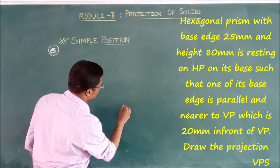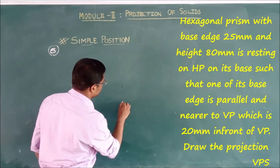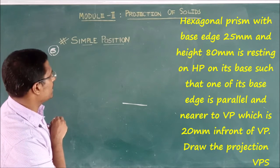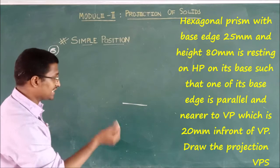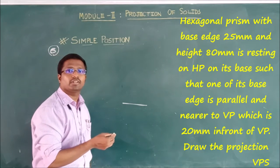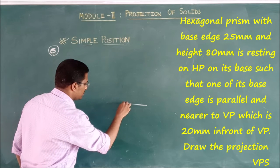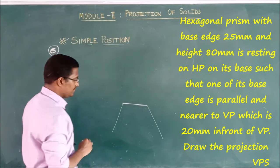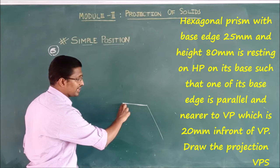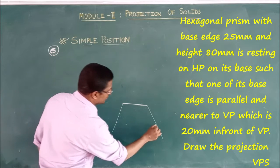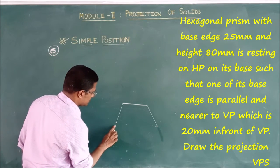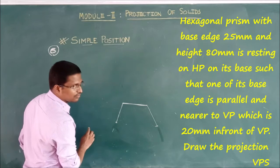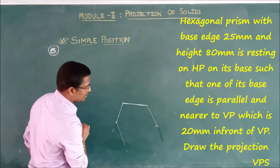So this base edge is parallel. We have 25mm on our basis. For the hexagon, I have the 120-degree measure. This is the center point. This is the 120-degree measure repeated at each vertex of the hexagon base.